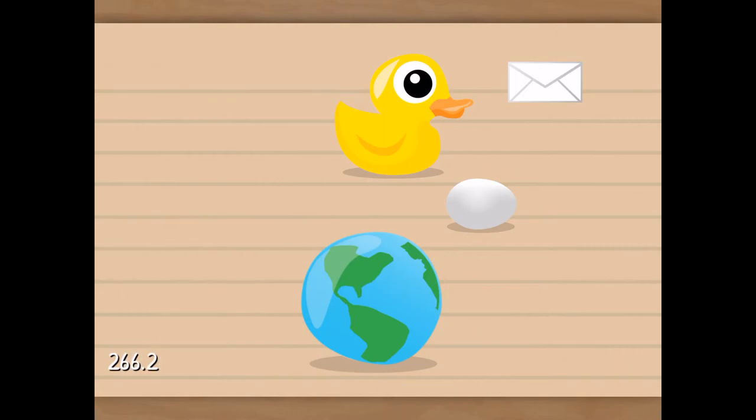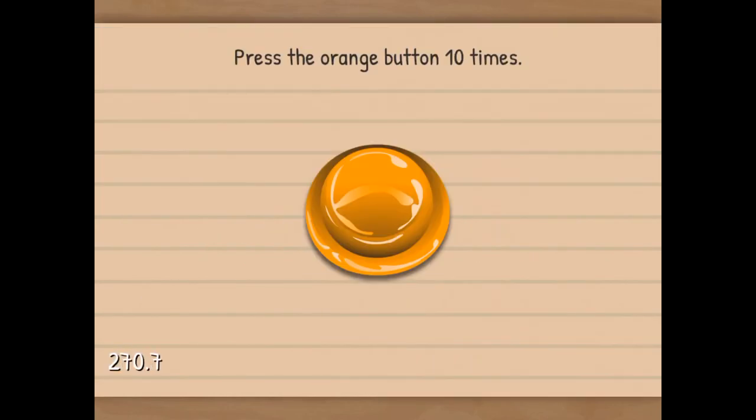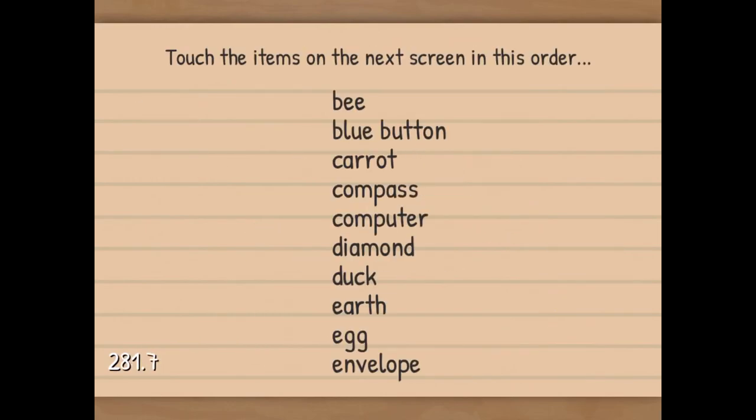Diamond. Then duck. Egg. No, sir. Oh. One, two, three, four, five, six, seven. Eight, nine, ten. Small stick. Blue button. Anywhere. Wow. This was so hard.